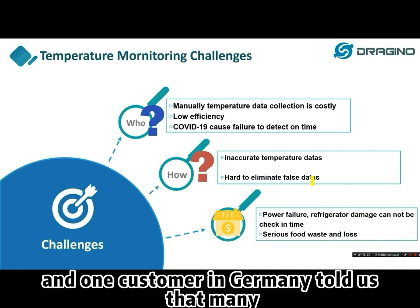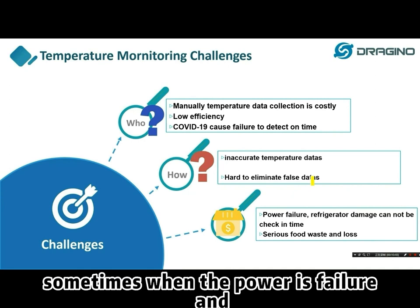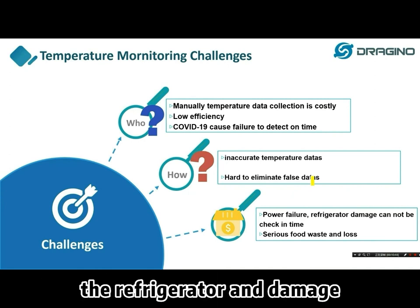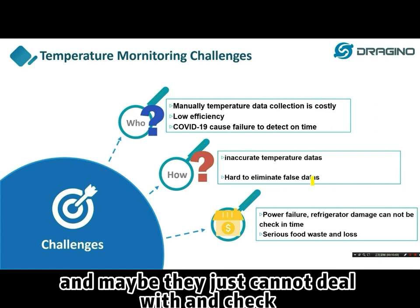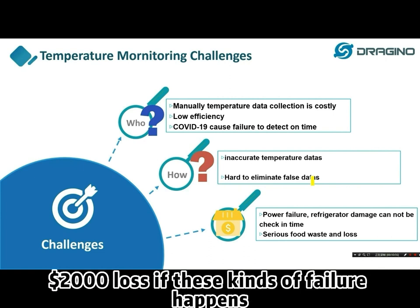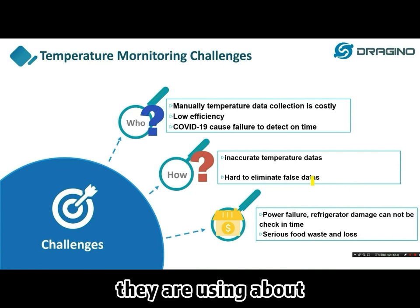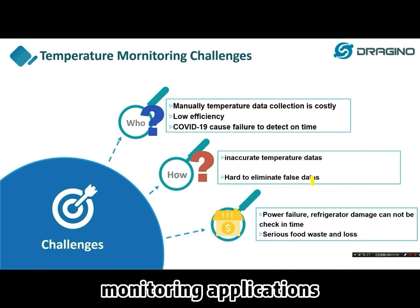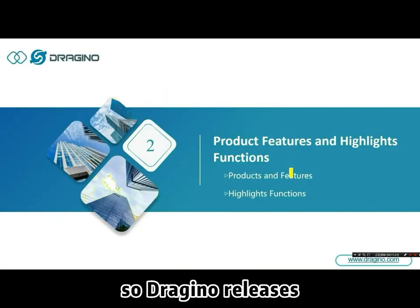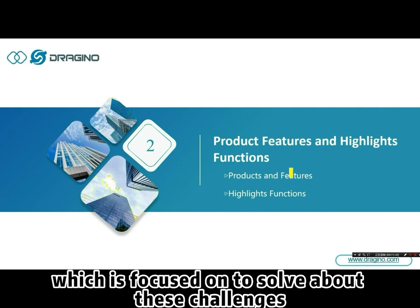One customer in Germany told us that in many supermarkets and food shops, when there is a power failure and refrigerators are damaged, they sometimes cannot deal with it on time. This caused serious food waste and big losses — every time such a failure happens, there may be more than $2,000 in losses. All of this creates challenges when using temperature monitoring applications. For this reason, Dragino released several types of devices and products focused on solving these challenges.